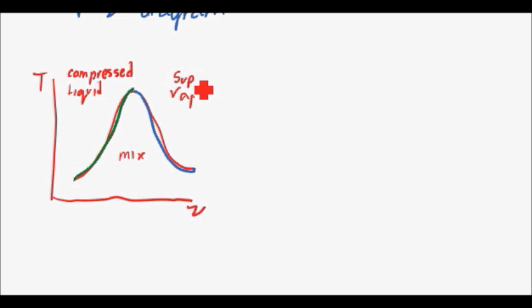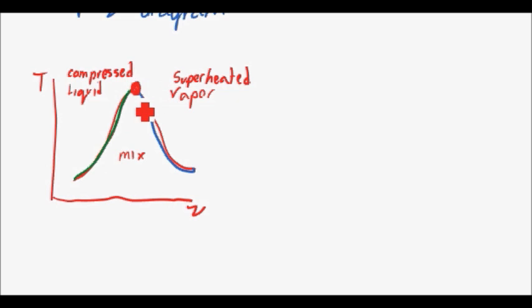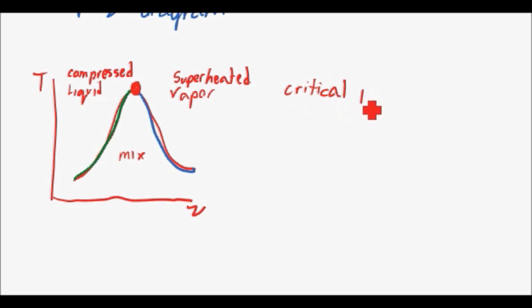One thing I want to point out about this plot that I didn't discuss last time is this location right here. What happens if you're at a liquid at this temperature, you get to this specific volume and you keep adding heat? This location is called the critical point, and it is defined as a location where saturated liquid and saturated vapor can coexist — essentially a transition point from liquid to vapor.